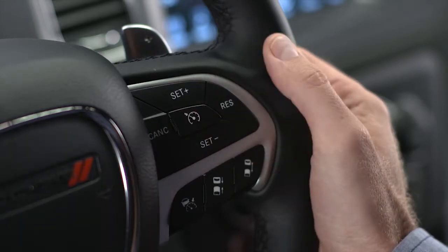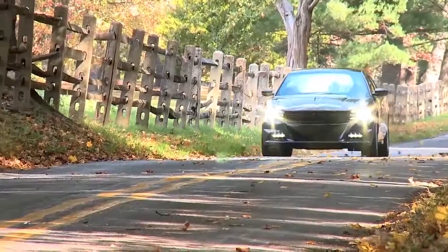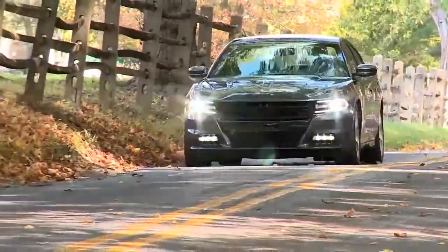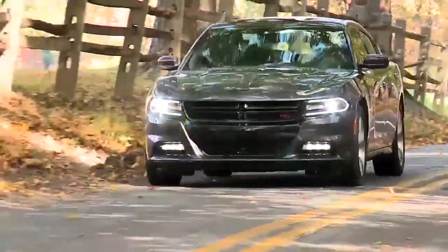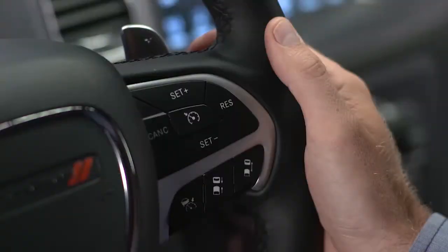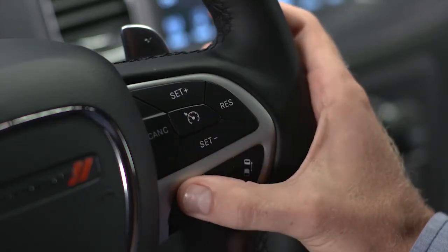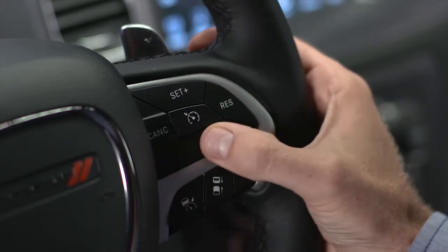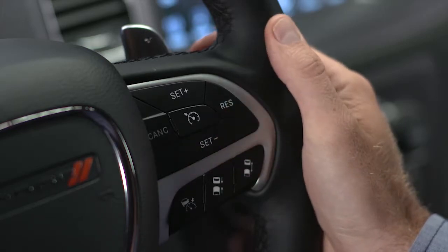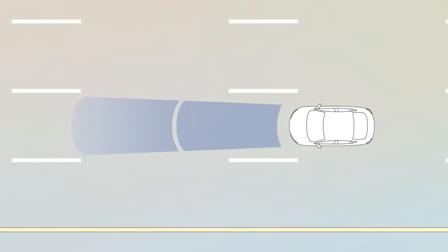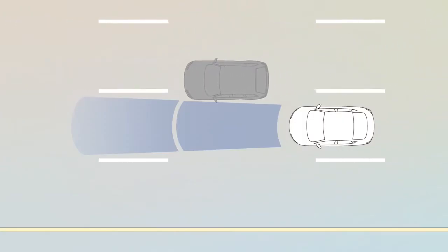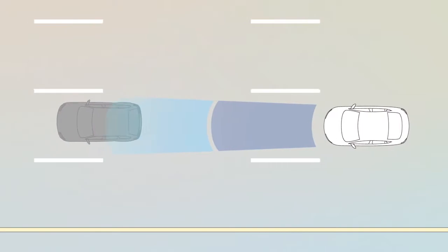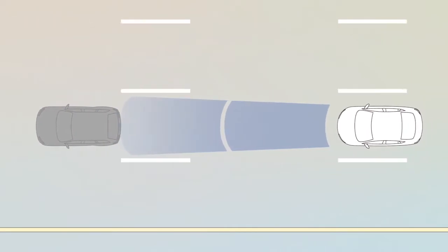It's best to leave the system off when not in use. Now let's look at the adaptive part of adaptive cruise control. To turn ACC on, push the ACC on/off button, then push Set+ or Set- to engage. The system will now maintain a set distance between you and the driver in front of you without having to constantly reset your speed.